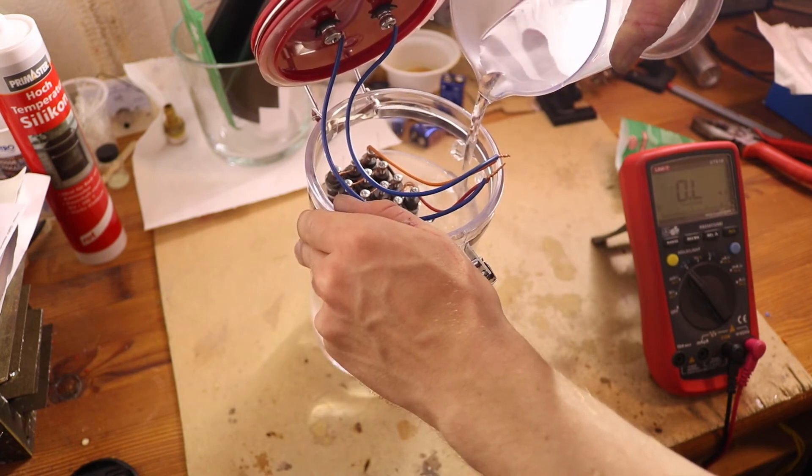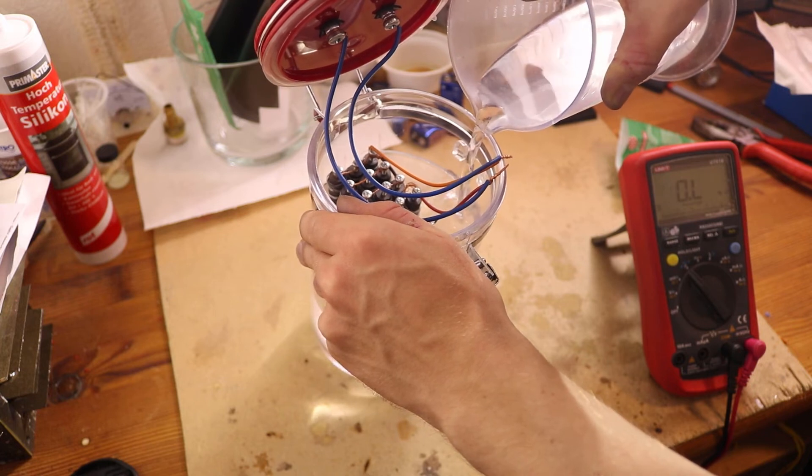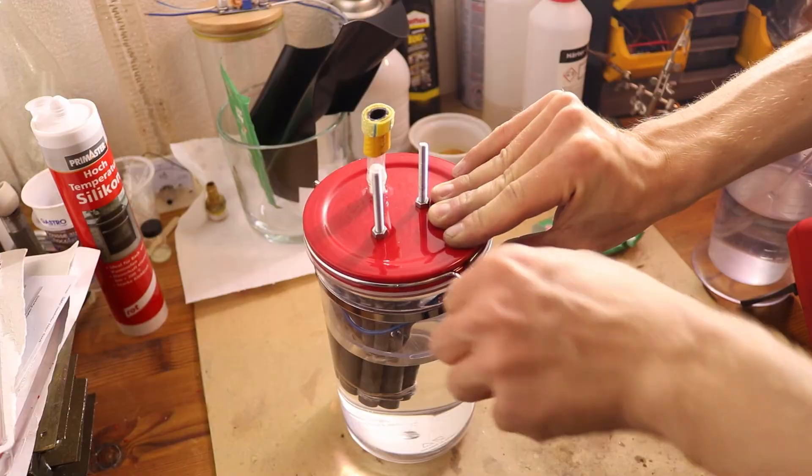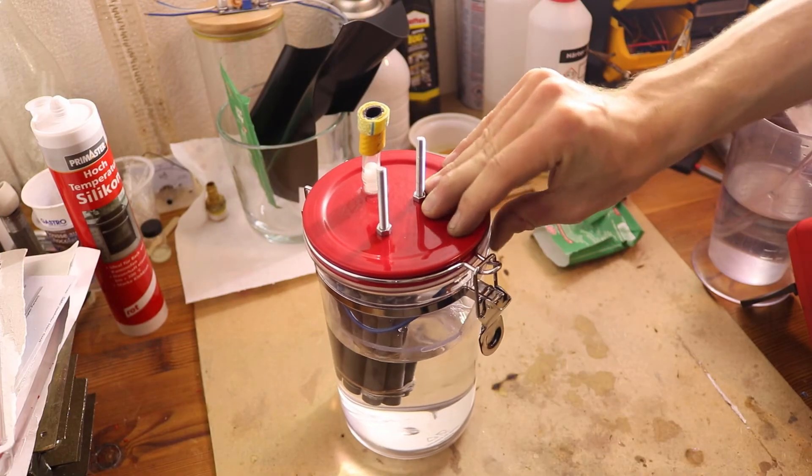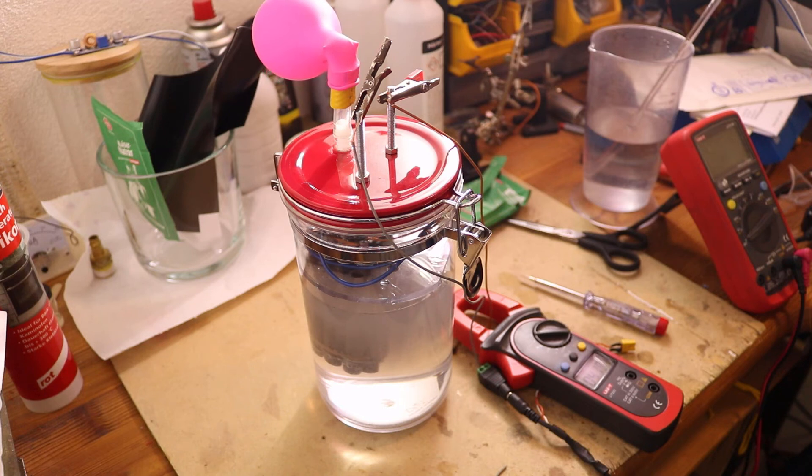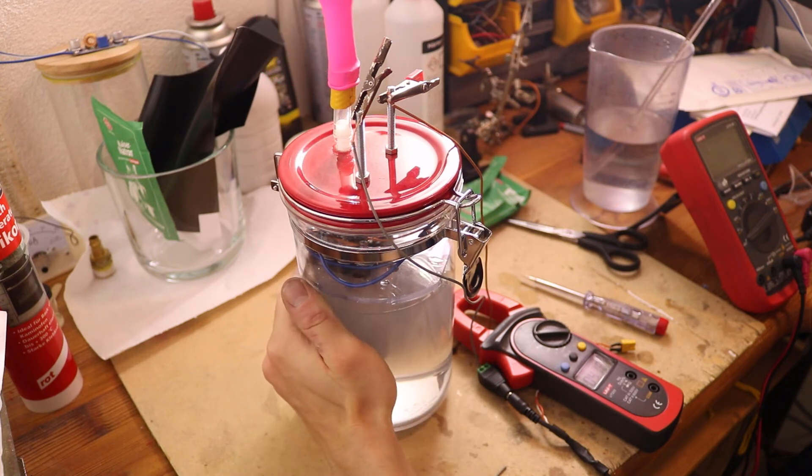It's important to not use table salt otherwise the generator will also produce chlorine gas. I then closed everything and connected a balloon to the gas outlet. This is the first test with little current and you can already see that the balloon is filling up.